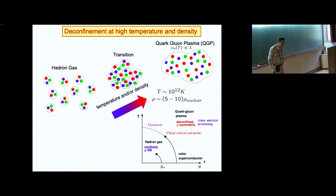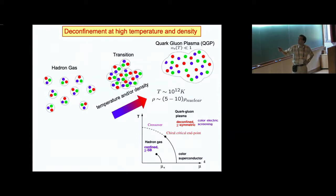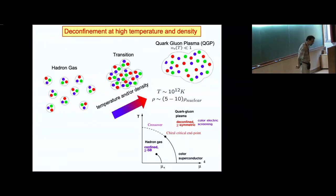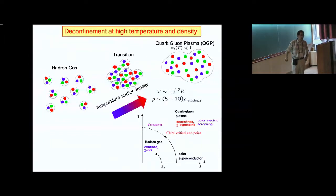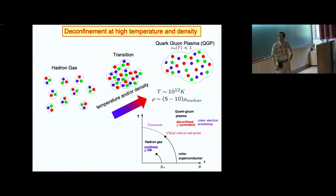If you push density and temperature high enough, all these hadronic bags coalesce and form one big bag containing all the quarks and gluons. The idea of quarks and gluons belonging to a particular hadron makes no sense whatsoever. That state of matter we call quark-gluon plasma — the name invented by Edward Shuryak — analogous to the idea of usual plasma. At very high temperature the dominant scale is temperature, so distances are the inverse of temperature, and because of asymptotic freedom the coupling is much smaller than one.